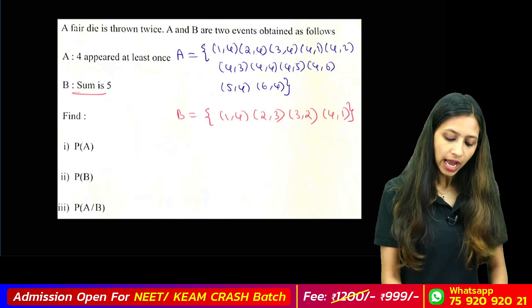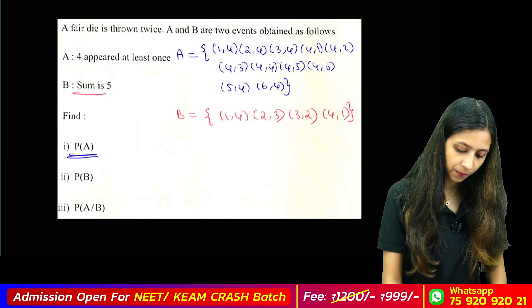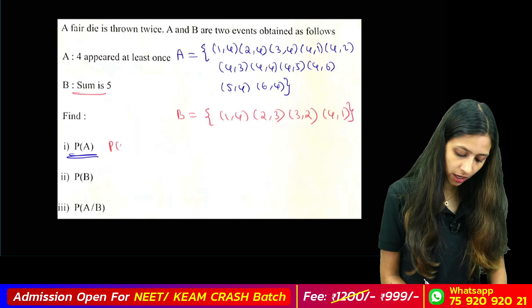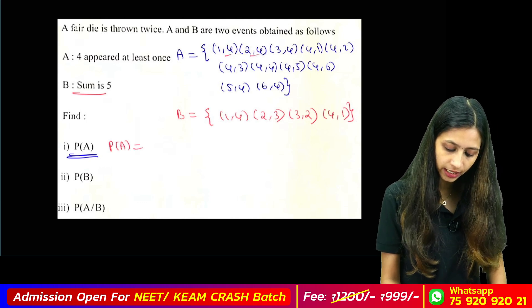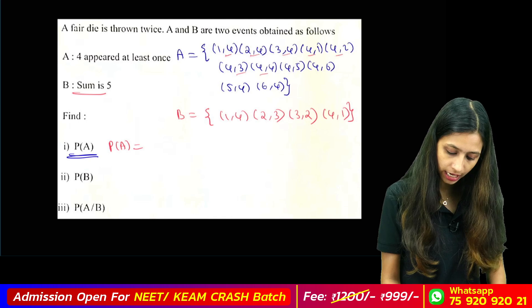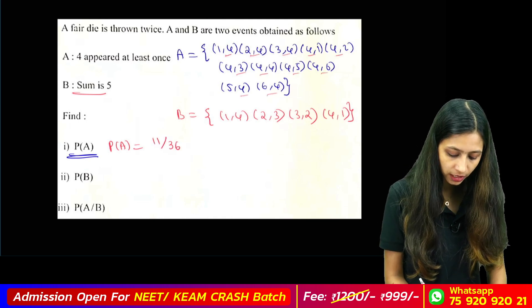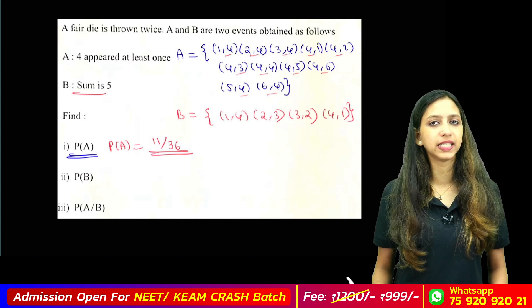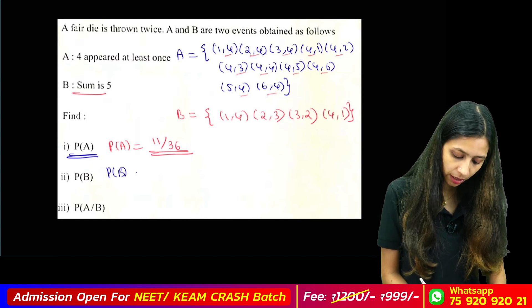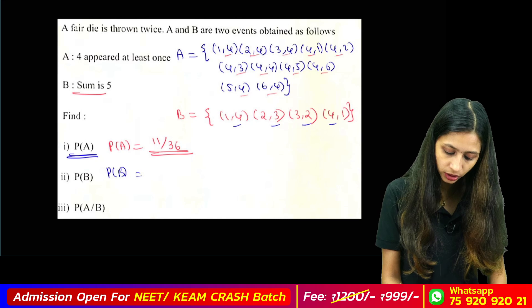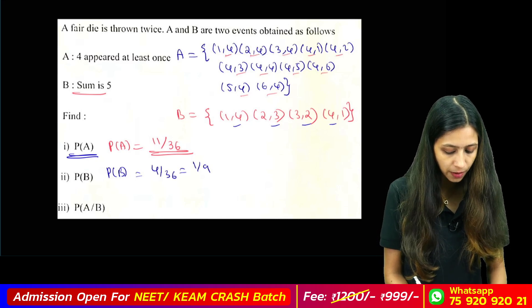First, we find P of A. What is P of A? We count: 1, 2, 3, 4, 5, 6, 7 — 11 outcomes. So P of A equals 11 by 36. Therefore P of B equals 4 by 36, which simplifies to 1 by 9.